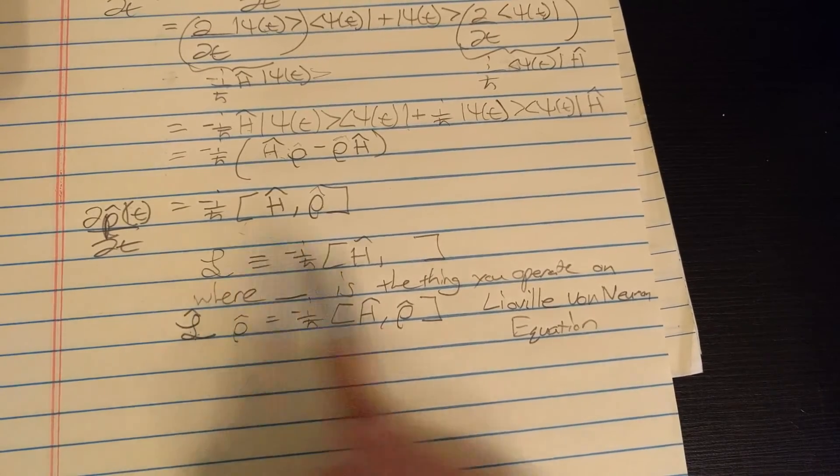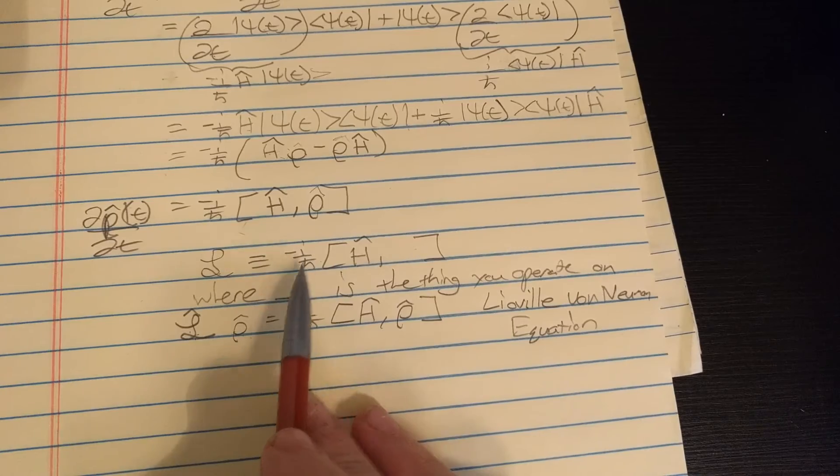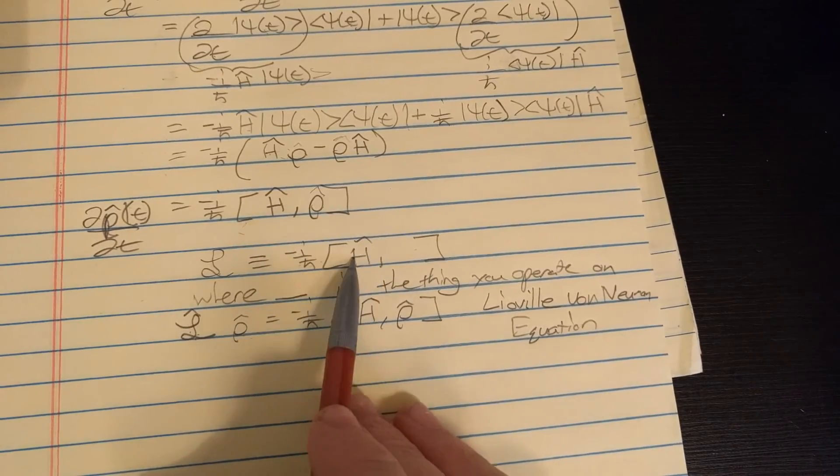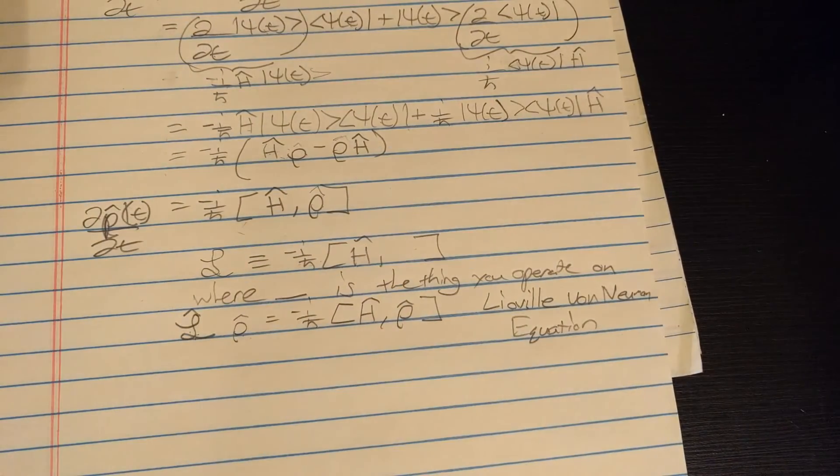And it's defined just like so, but the i over h-bar may not be there, and the Hamiltonian may be a different operator.